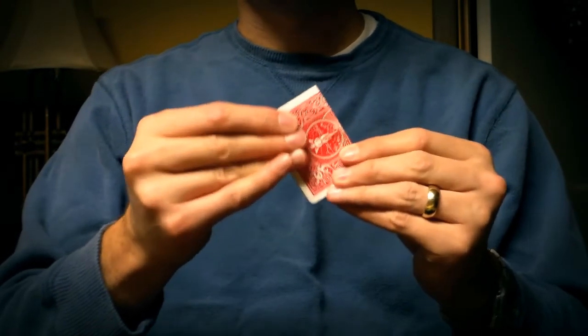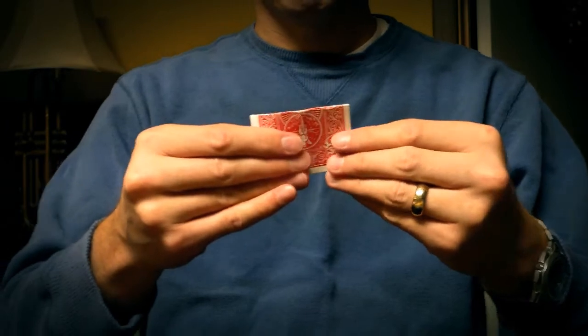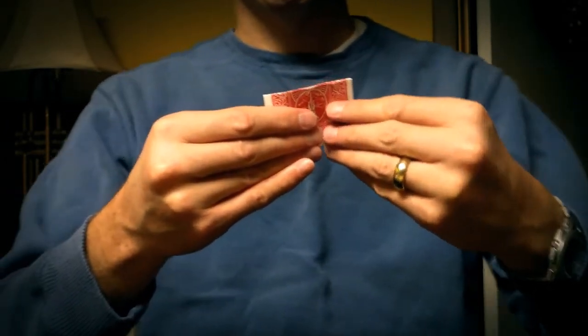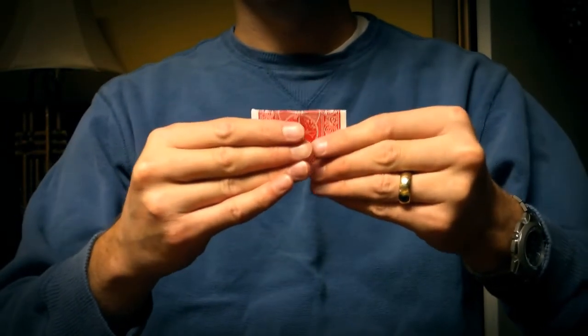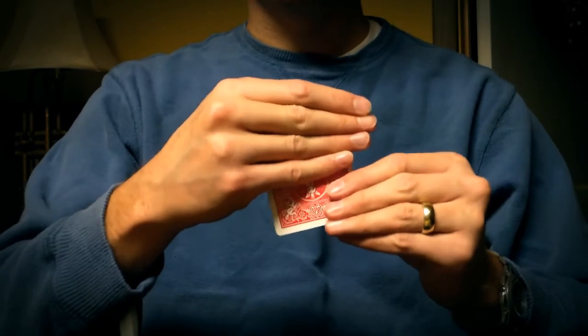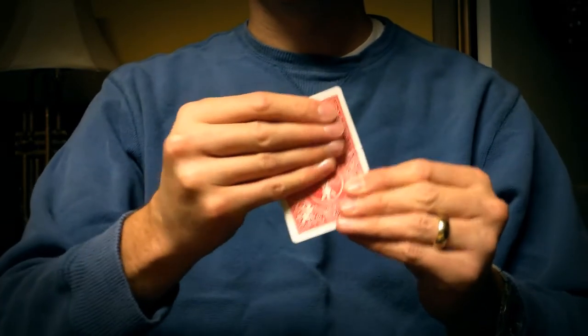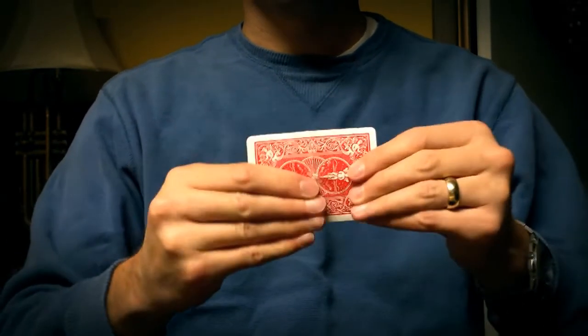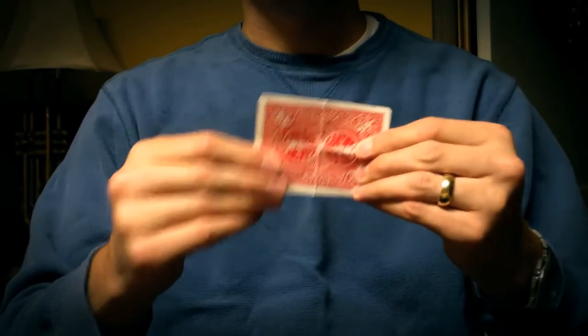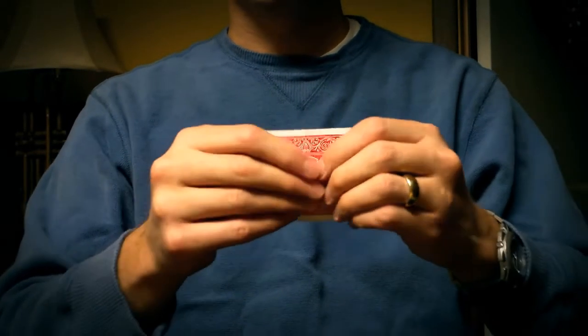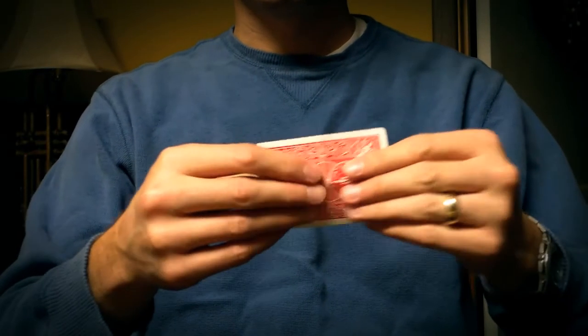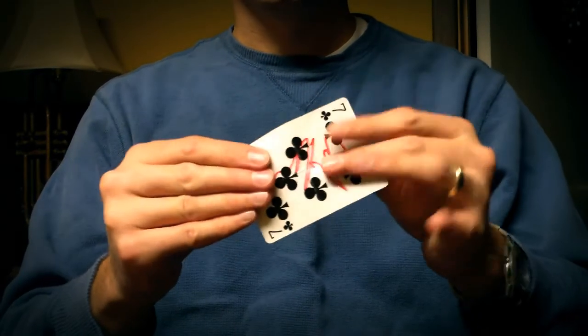So this is just my work-in-progress solution to the torn and restored card plot, using literally any card from a regular deck of cards. You end clean without any strange ditching or anything like that.